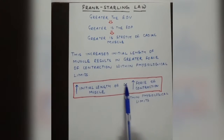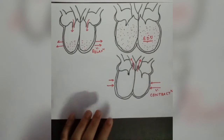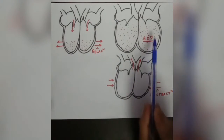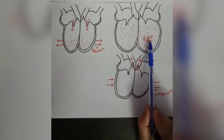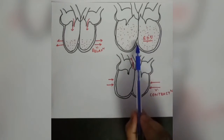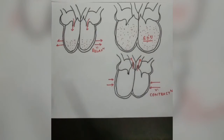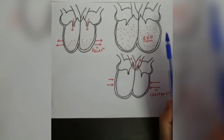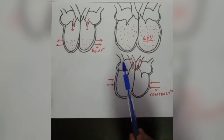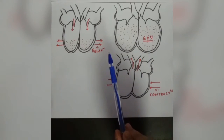The increased initial length of muscle is directly proportional to the increasing force of contraction within physiological limits. In Frank-Starling law: the end diastolic volume increases end diastolic pressure. That pressure is applied to ventricular walls, causing stretching of the cardiac muscle, which increases the initial length of the muscle. The increased initial length of the muscle results in a greater force of contraction — the more the length of the muscle increases, the more the force of contraction increases, within physiological limits.